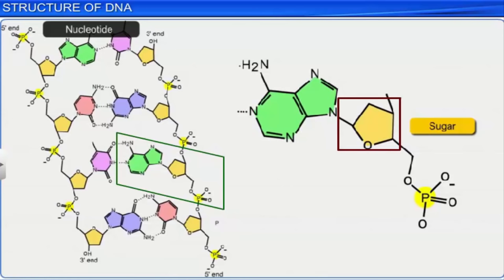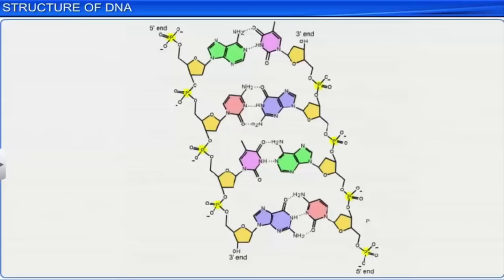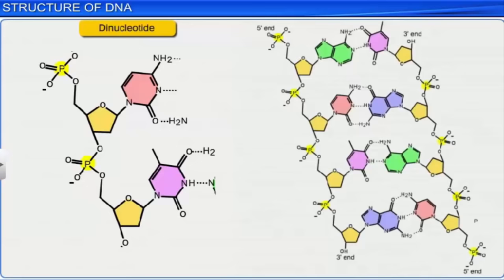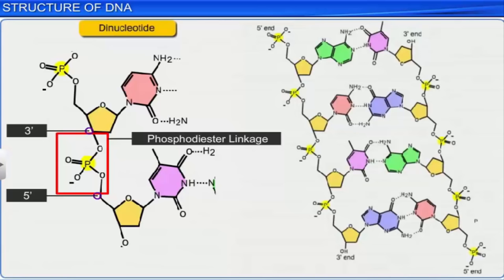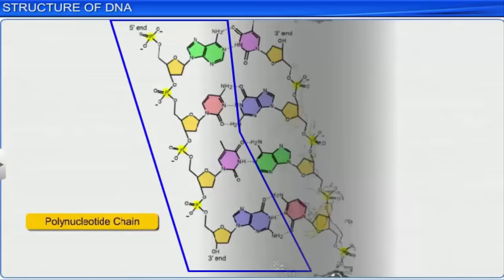Conversely, depending on the sugar present, a nucleotide or deoxynucleotide is formed when a phosphate group is linked to the 5' OH of a nucleoside through a phosphoester linkage. Also, a dinucleotide is formed when two nucleotides are linked through a 3'–5' phosphodiester linkage, and several such nucleotides can join similarly to form a polynucleotide chain.